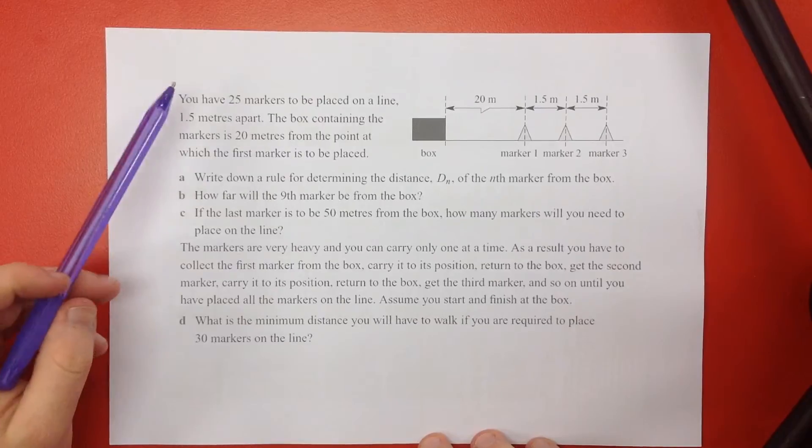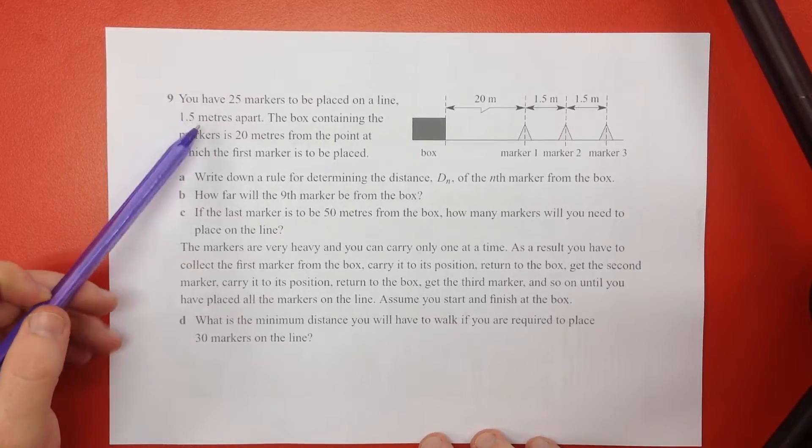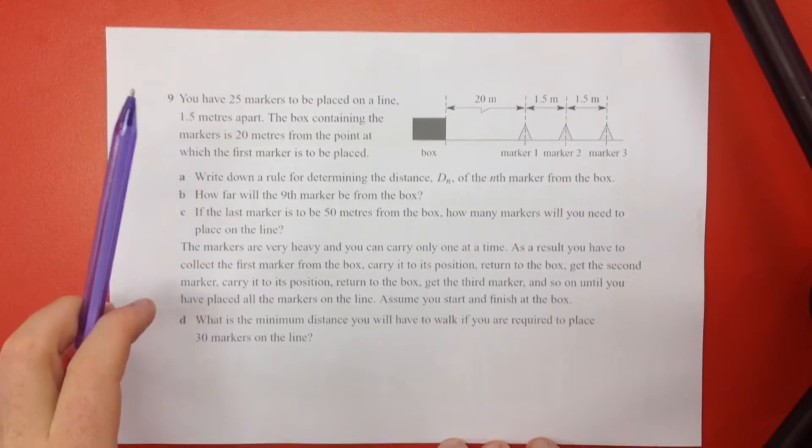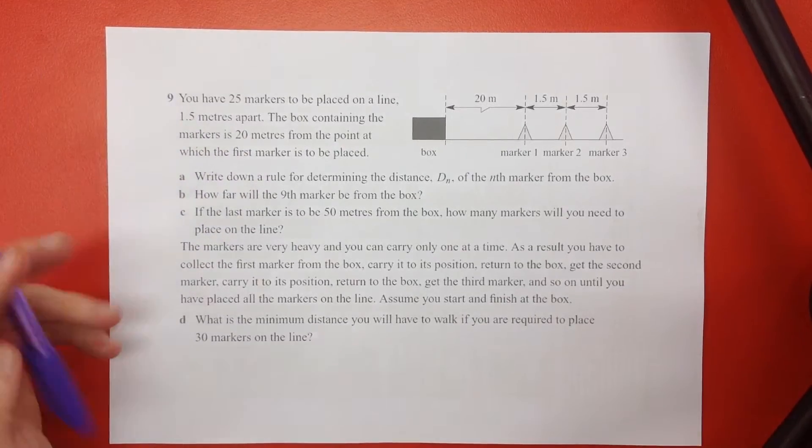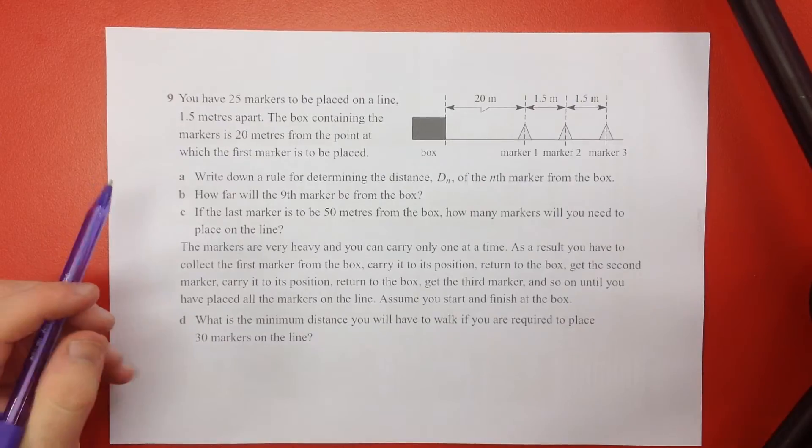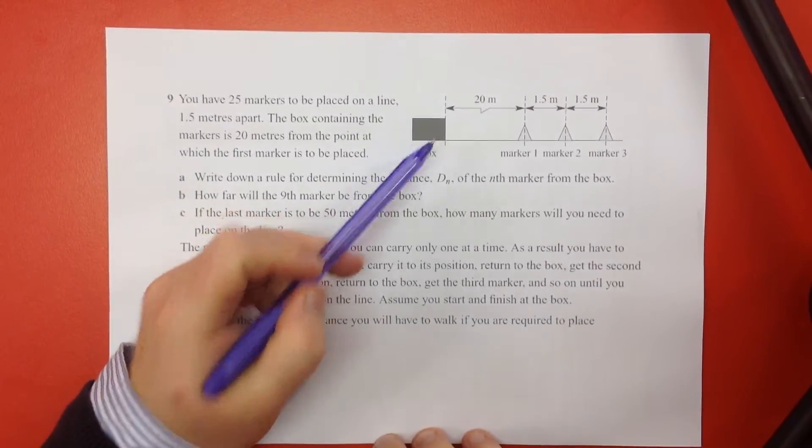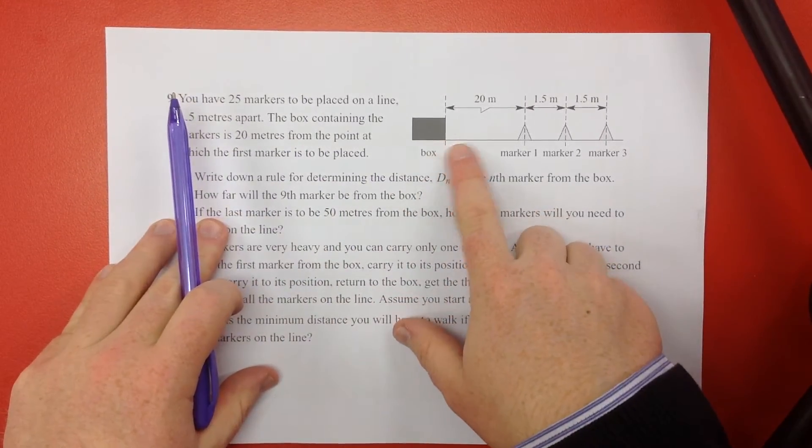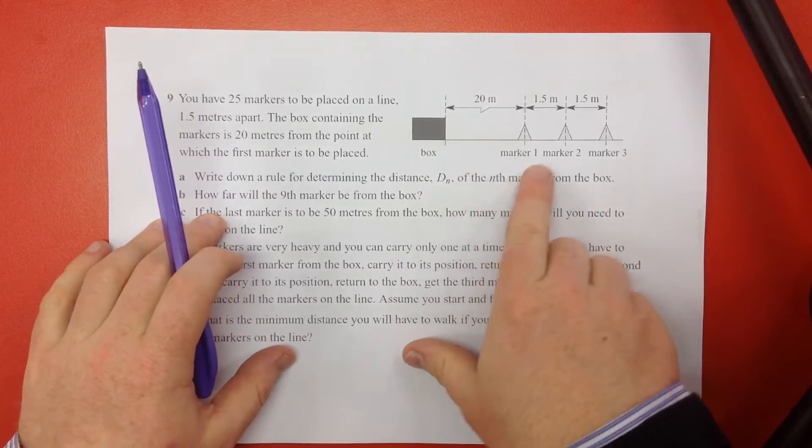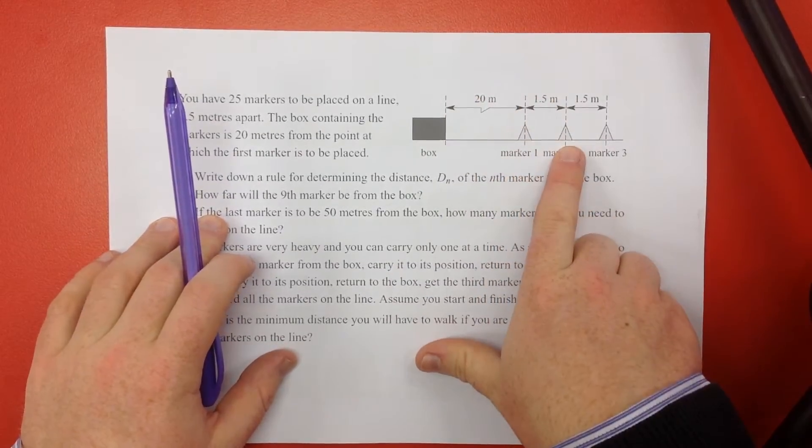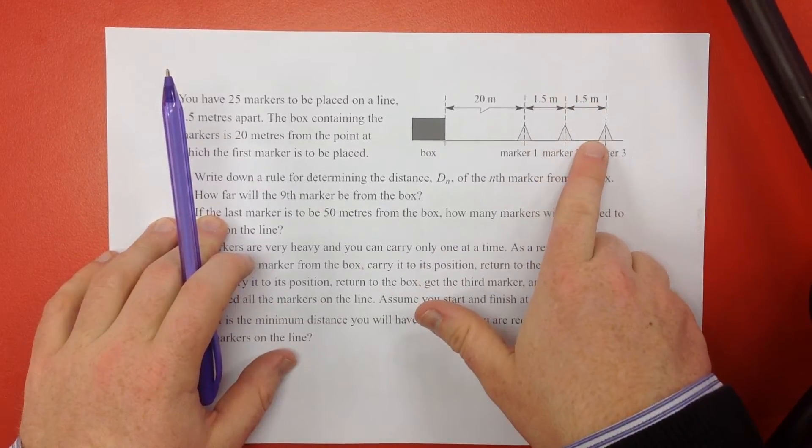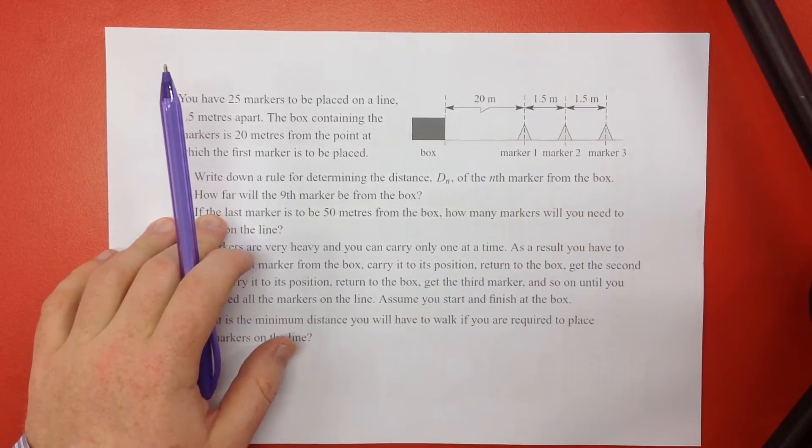So I've got 25 markers placed on a line, and they're one and a half metres apart, and there's this box that's holding the markers, and it's 20 metres from the point at which I first put down a marker. Man, I found that really hard to understand the first time I read it. So here's the box, you're going to walk along probably the oval or whatever it is, and then you're going to put your first marker down 20 metres away, and the next one is an extra one and a half metres away, the next one is another one and a half. We're going to keep placing them down, away from the box.